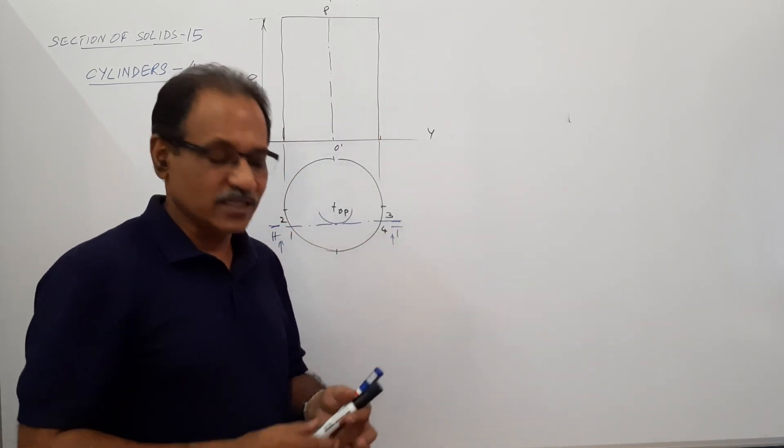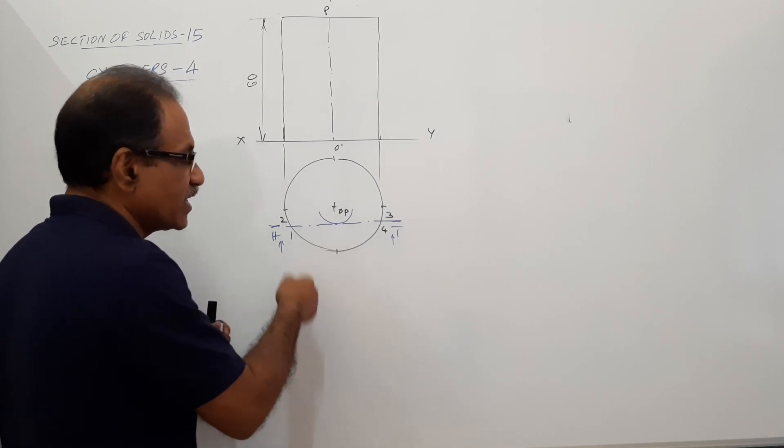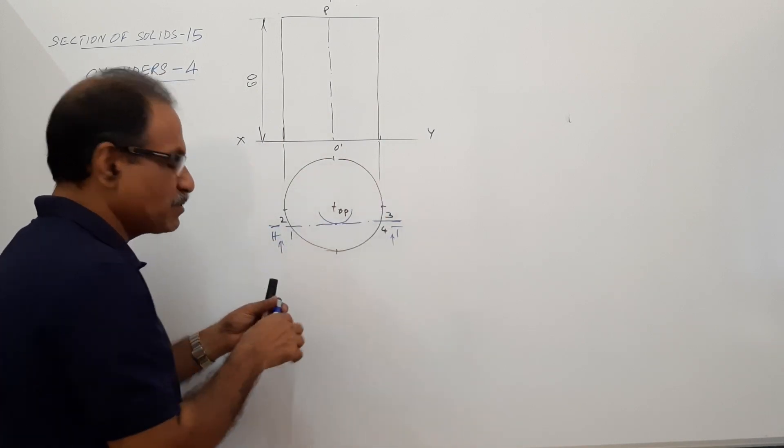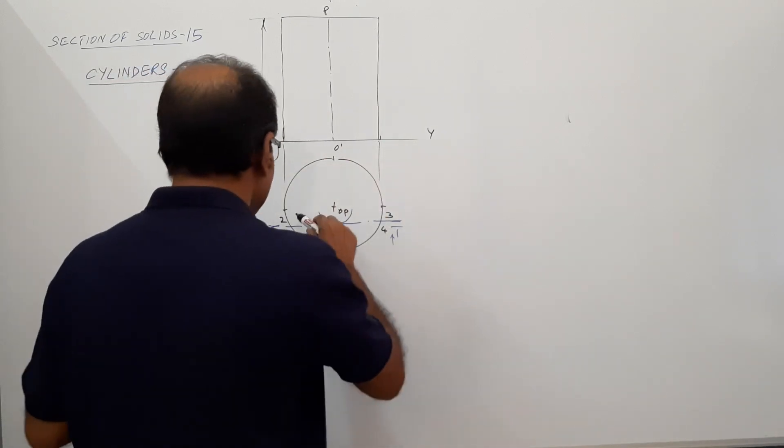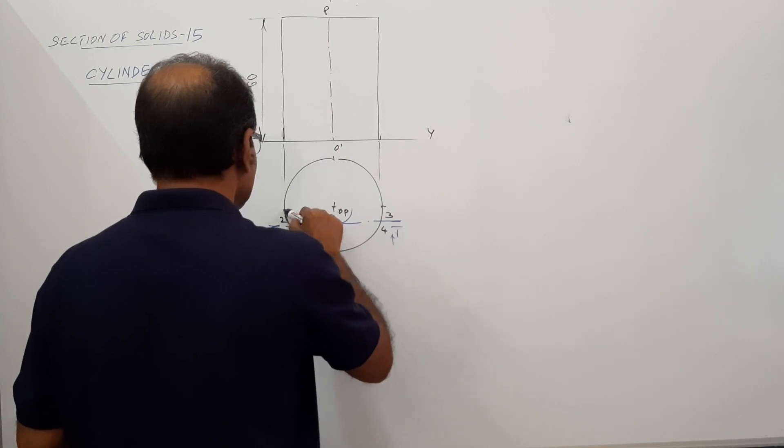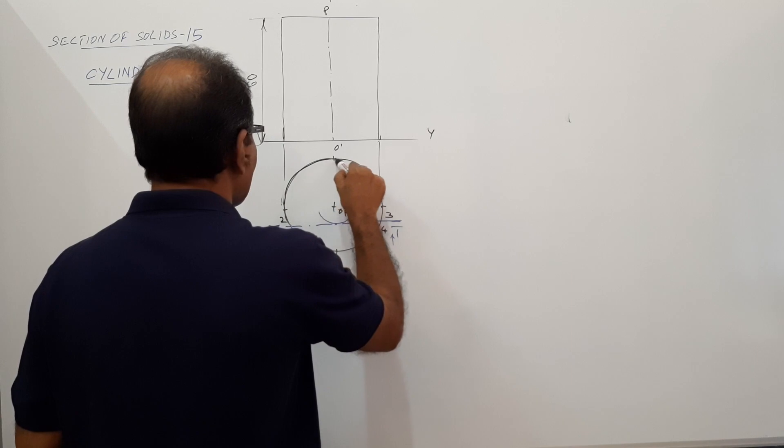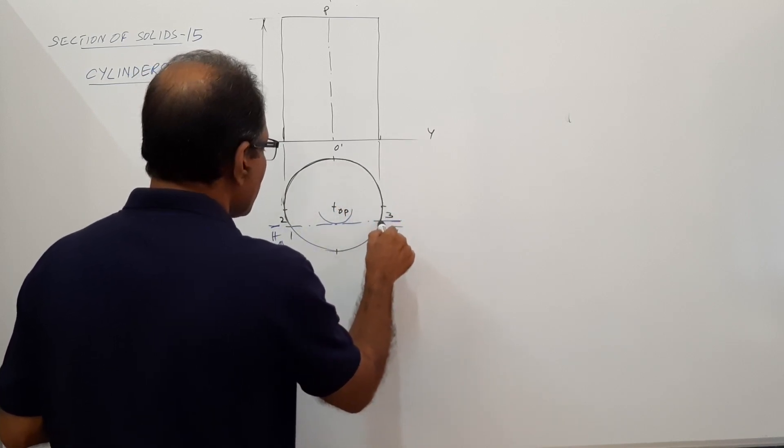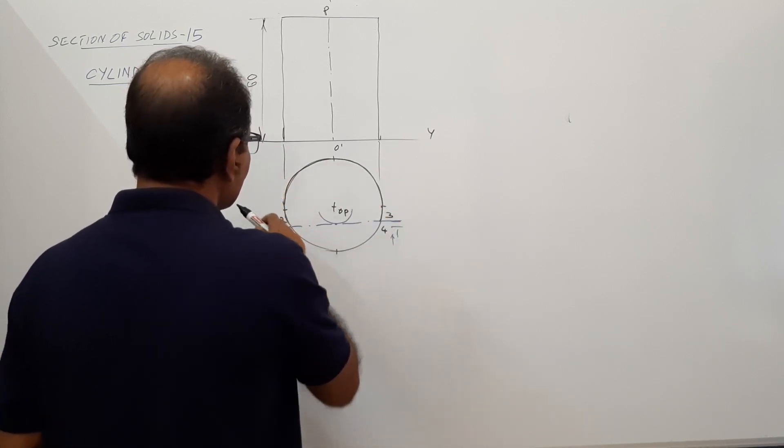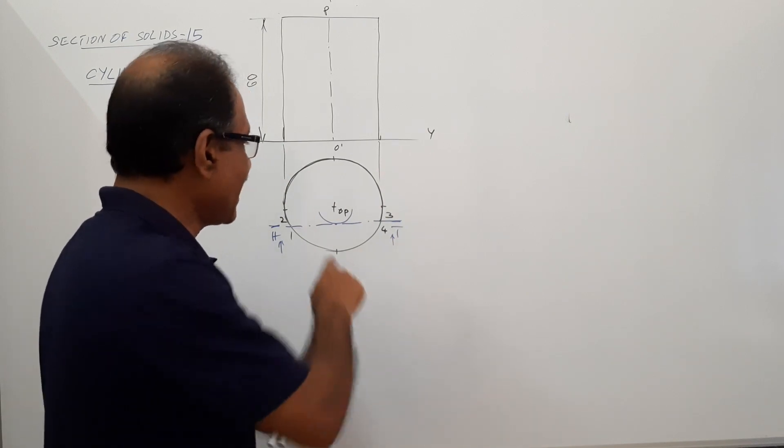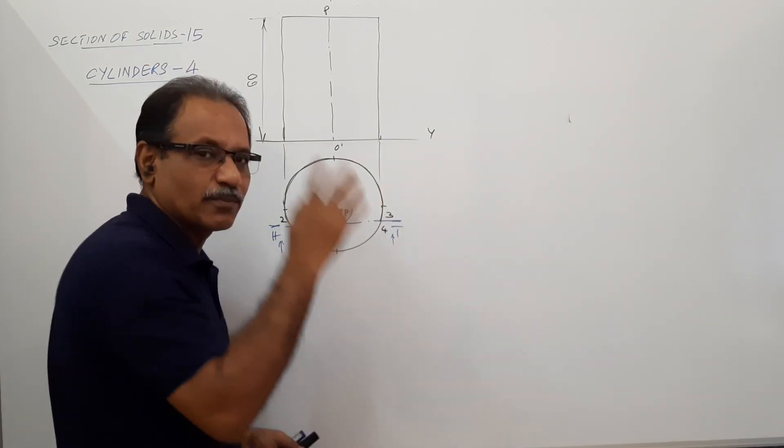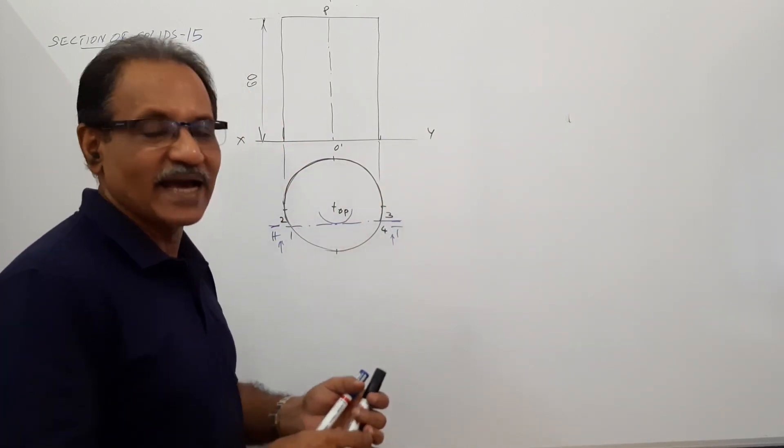Which portion will you remove? You will remove this portion. Indicating that this portion is kept, what do you do? You will darken it. What message are you giving? You are saying that this is kept and this is removed. Finished. Sectional plan is over.